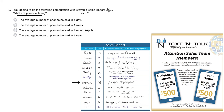We know that Steven sold an average of 55 phones per week. So if he sells 55 phones in one week, 55 phones divided by 7 days is going to be the number of phones he sold in one day.